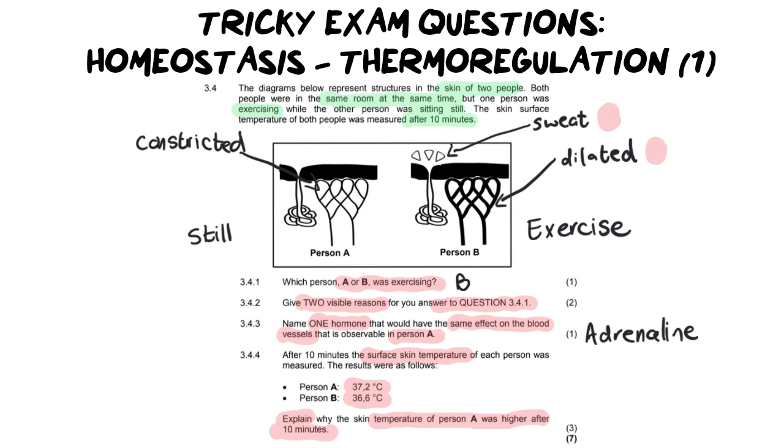So for three marks it's an explain question. Let's remember that an explain question must always have a minimum of two parts to it. One you always have your statement, right? The second part is your reason. Now because this is out of three you need two reasons and so on and so forth if the reasons increase in mark allocation.